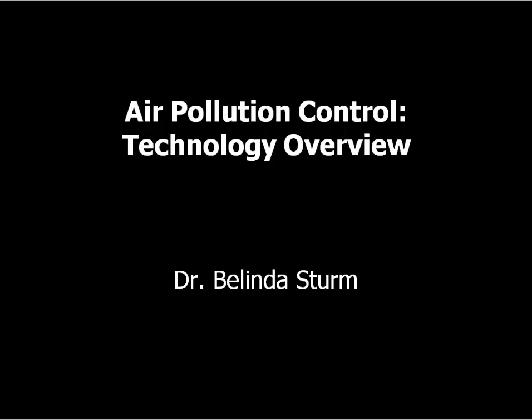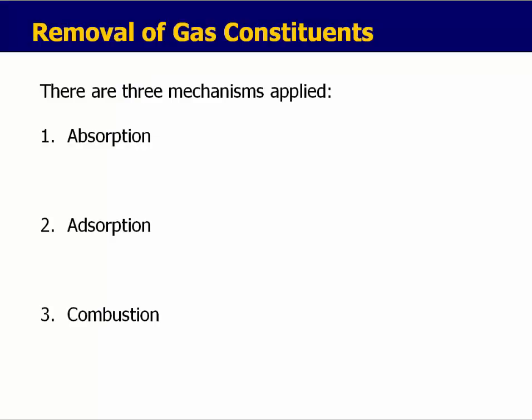In this module, I'll be discussing how air pollution control devices are designed. First, we'll discuss the removal of gas constituents — these would be toxic gases that are present in a gas phase. There are three mechanisms that can be utilized to remove gas constituents.